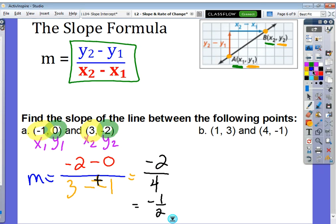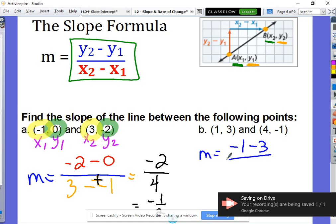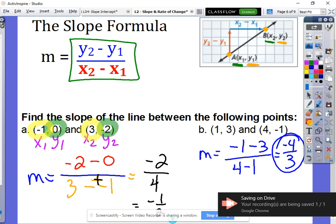Hopefully you got this one no problem. You should have ended up with negative one minus three on the top and four minus one on the bottom. That leaves negative four over three, and there's no way to simplify that any further. So there you go, that is your slope. Hopefully you're feeling good when it comes to calculating the slope.